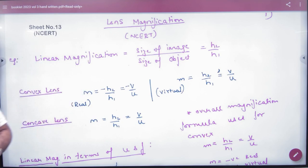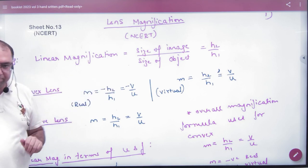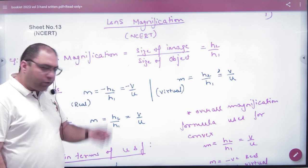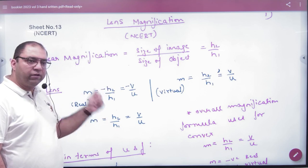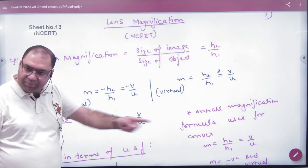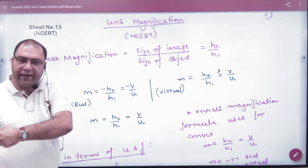Now what do we do? We put sign conventions. It is called convex lens. In convex lens there are two real and virtual cases. In real image, the image is inverted. So H2 is negative, H1 is positive. And the image is on the other side, so V is positive and U is negative.